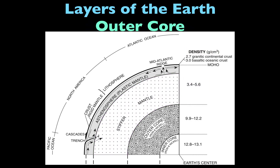The next layer is the outer core, highlighted here. It's important to note that the outer core consists of iron and nickel, but it's liquid iron and nickel — think of melted down metal. When many people think of liquid, they automatically think water. It's not water in the outer core; it's iron and nickel, but melted down in the liquid state.